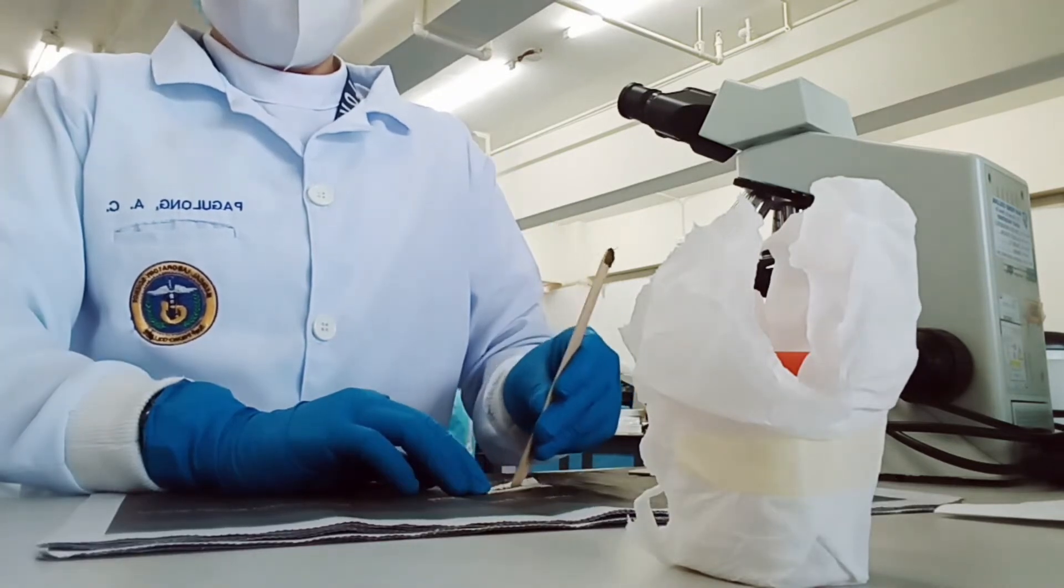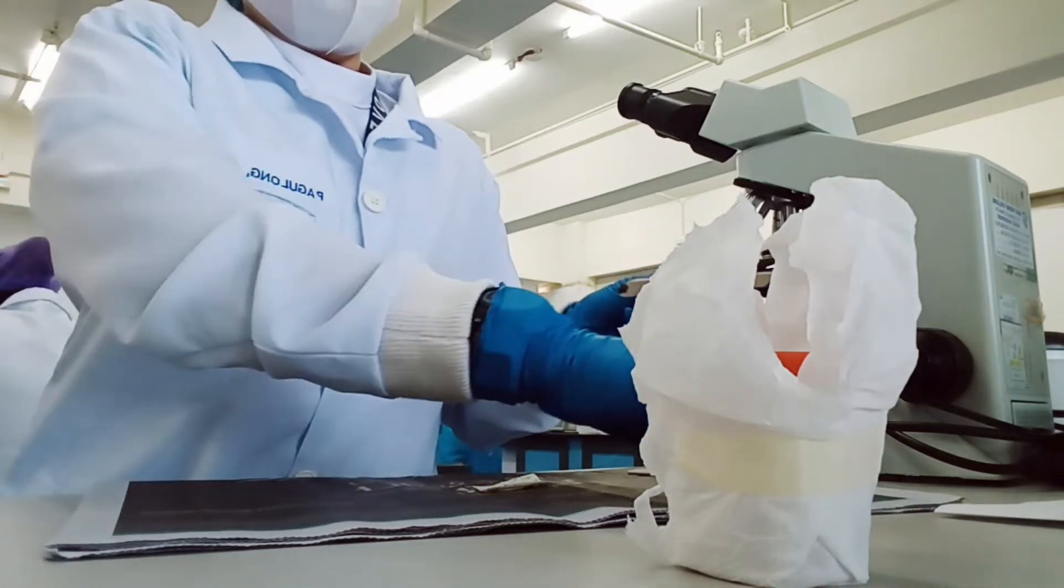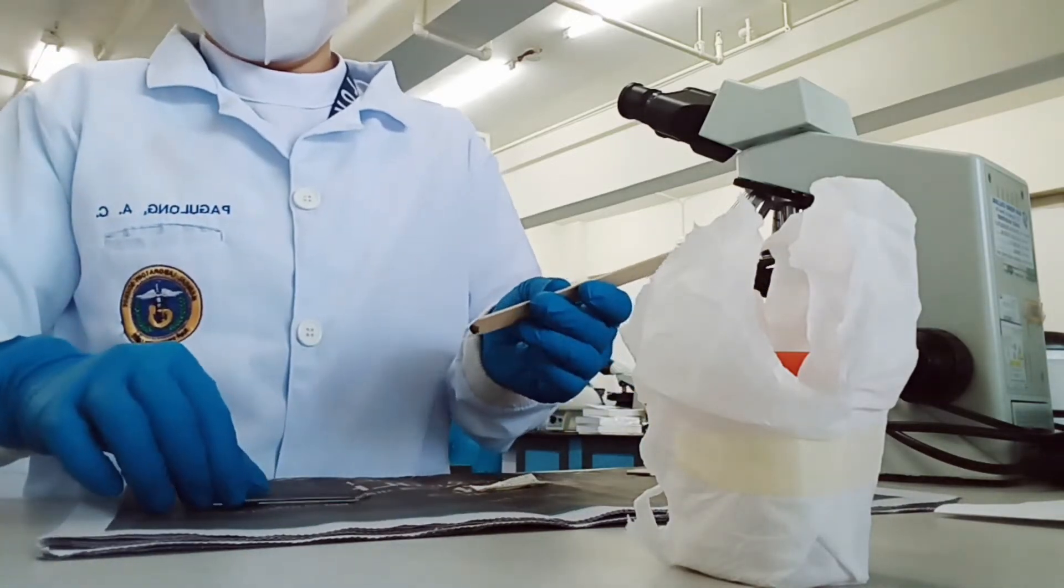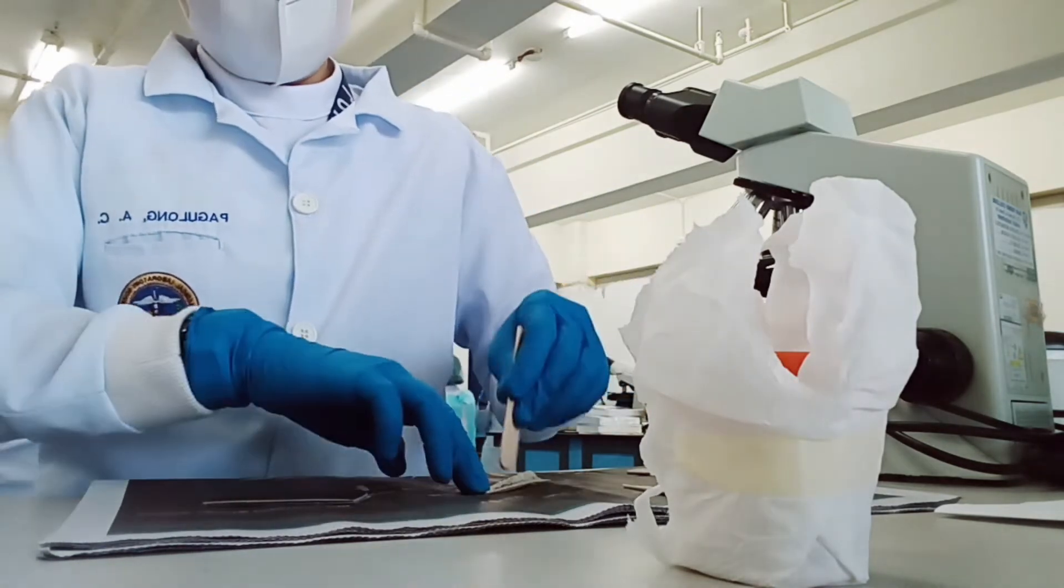Then scrape the sieved fecal material through the screen so that only the debris remains. Get the Kato-Katz template with the slide and scrape up some of the sieved feces to fill the hole in the template.